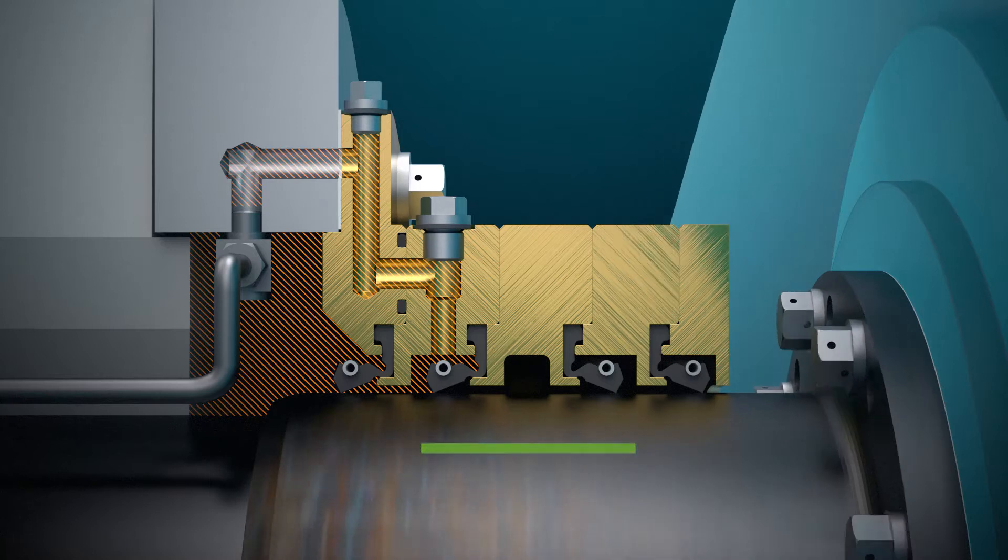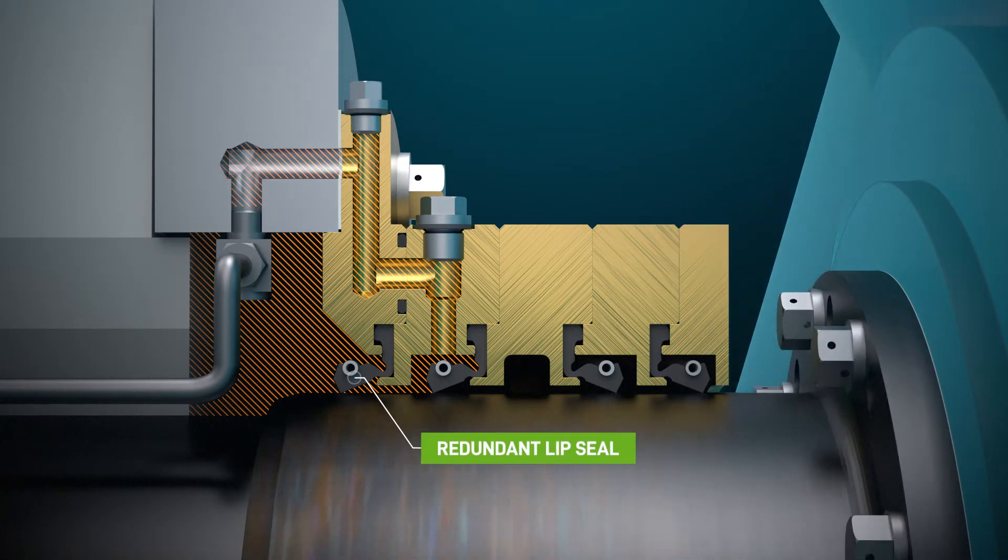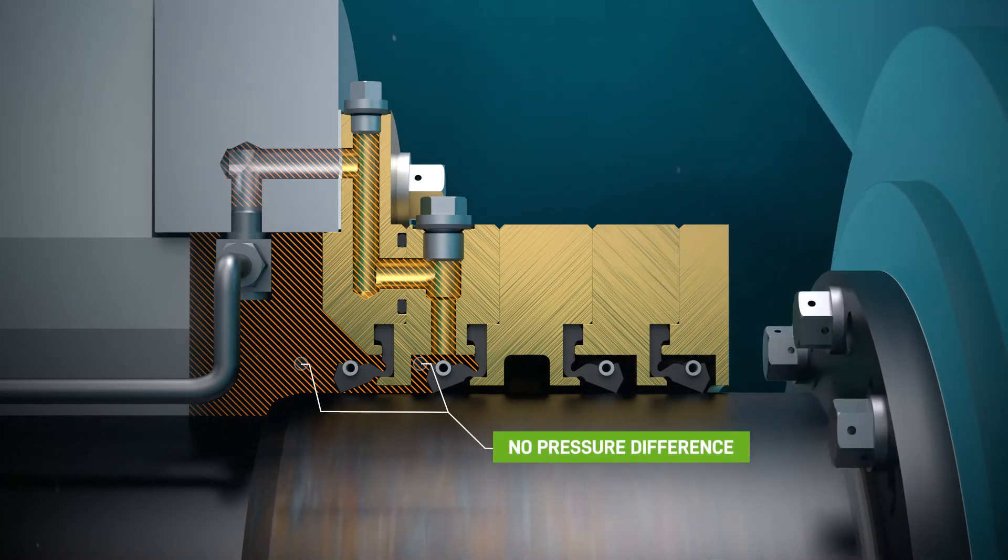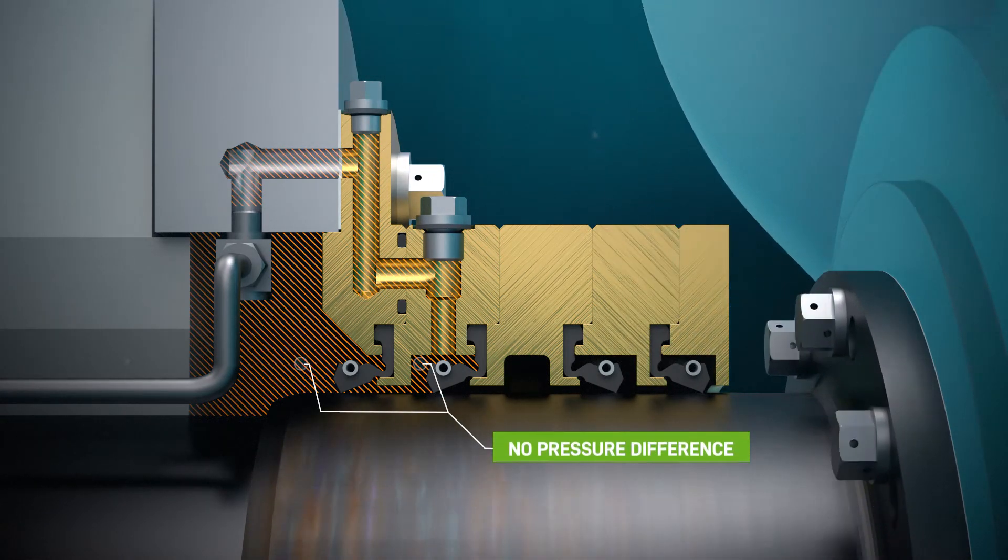The chamber between the two oil repellent lip seals is pressurized by the stern tube oil header tank. This way, the pressure on both sides of the fourth lip seal remains equal.